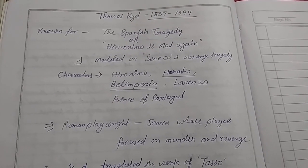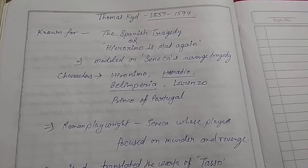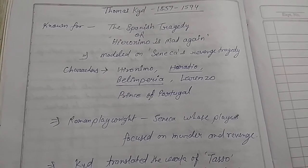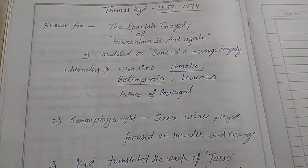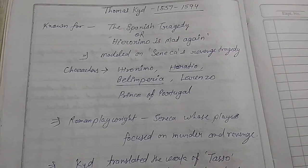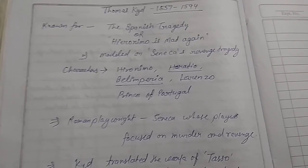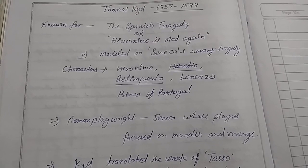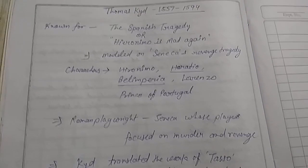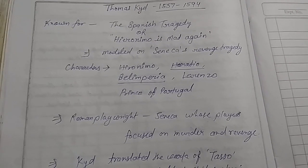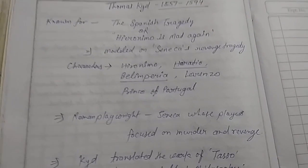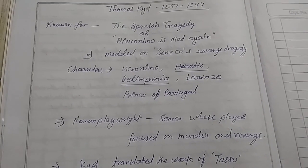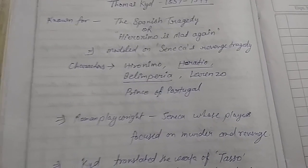In this series, today we are going to deal with Thomas Kyd and the Spanish Tragedy written by Thomas Kyd. Thomas Kyd was born in 1557 and died in 1594. He is best known for his tragedy, the Spanish Tragedy. The subtitle of this tragedy is 'Hieronimo is Mad Again.' The subtitle is important and has been asked in exams.